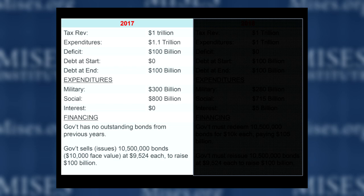I'll go through it quickly because it's pretty standard stuff, but just to lay the foundation: tax revenue is one trillion dollars, expenditures are one point one trillion. So this government in 2017 is spending one hundred billion dollars more than it's taking in tax revenue — that's why the deficit is one hundred billion. A deficit is a flow concept: it refers to something over a certain period of time. During the course of 2017, this government spent one hundred billion dollars more than it took in tax revenue.